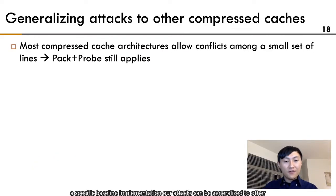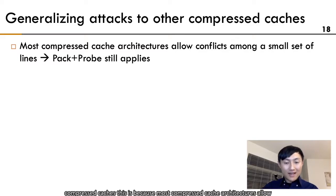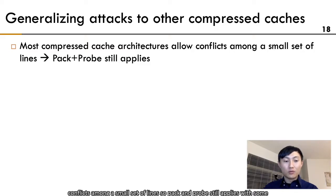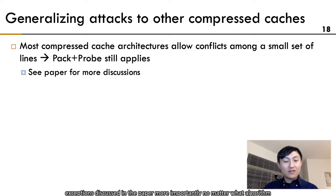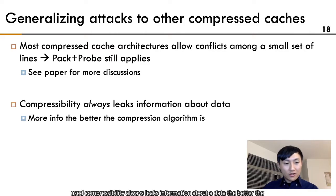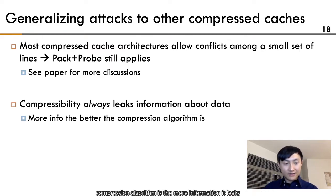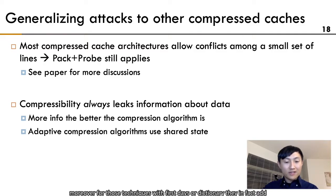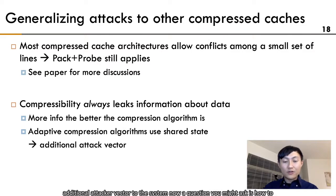While we target a specific baseline implementation, our attacks can be generalized to other compressed caches. This is because most compressed cache architectures allow conflicts among a small set of lines, so Pack and Probe still applies, with some exceptions discussed in the paper. More importantly, no matter what algorithm is used, compressibility always leaks information about the data — and the better the compression algorithm, the more information it leaks. Moreover, for techniques with shared states or a dictionary, they in fact add additional attack vectors to the system.